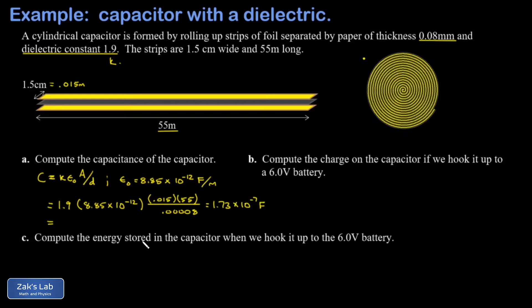Typically, capacitors are labeled in picofarads or microfarads — nanofarads is not very typical. So I'm going to express this in terms of microfarads. Shifting the decimal place and adjusting the scientific notation gives a factor of 10 to the negative 6, or microfarads. The answer is 0.173 microfarads.